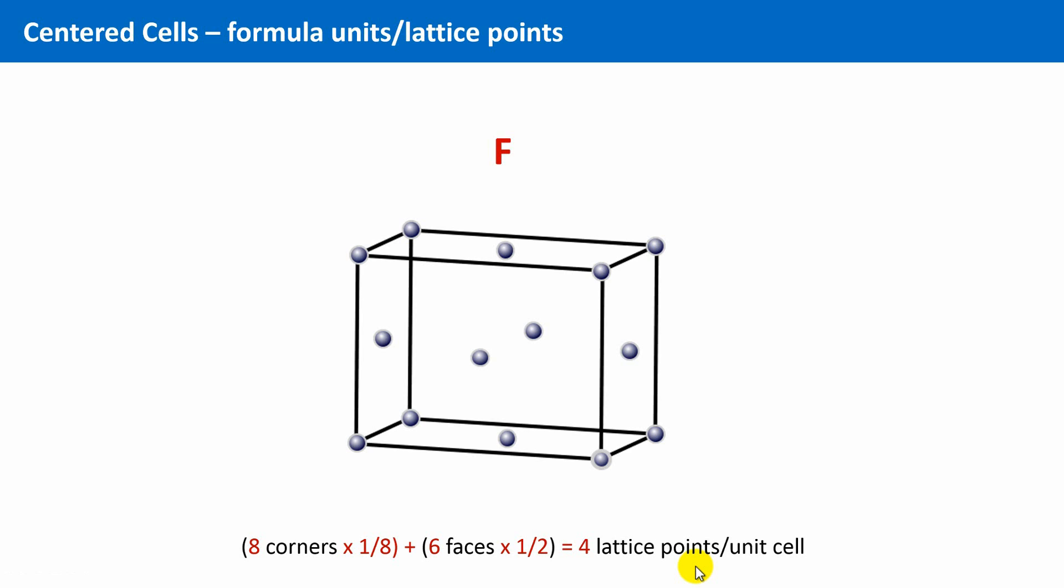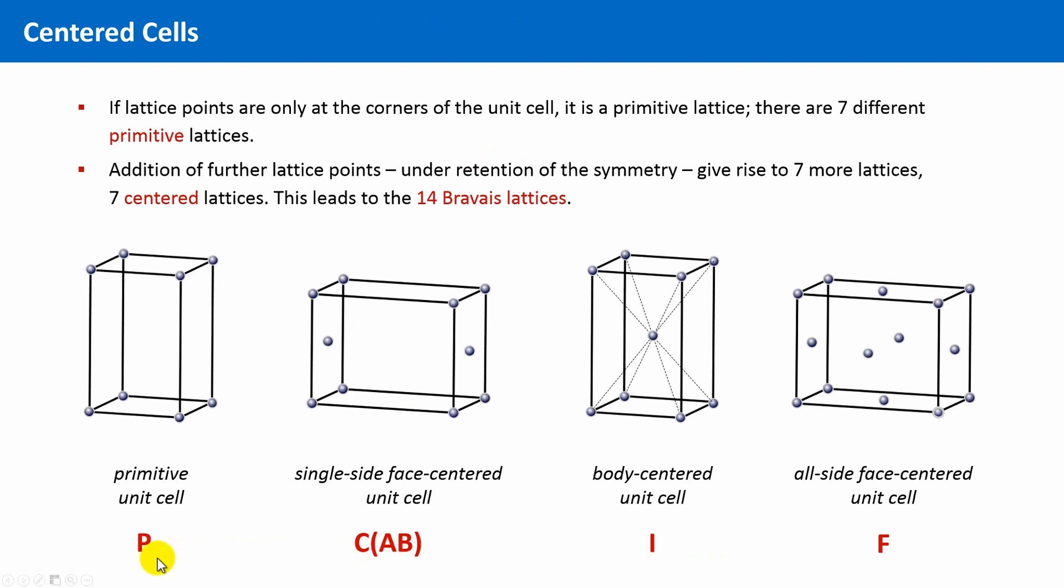In principle, we have four kinds of centerings. Here they are shown again in an overview: the primitive non-centered case, the single-sided face-centered unit cell, the body-centered case, and the all-side face-centered unit cell, which you can also call shortly all-face-centered unit cell.